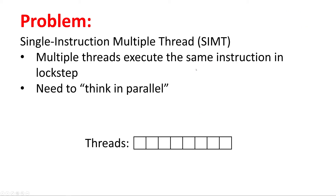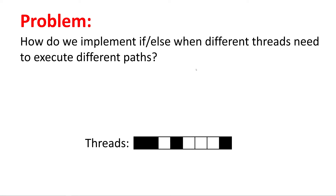What's the problem with GPUs? As far as I know, all modern ones use a single instruction multiple thread architecture. That means you have multiple threads - typically 32 or 64 threads - that execute the exact same instruction in lockstep. So that means you're no longer dealing with one thread and one line of code; you need to think in parallel. But the biggest problem is: how do we implement if-else when different threads need to go down different paths?